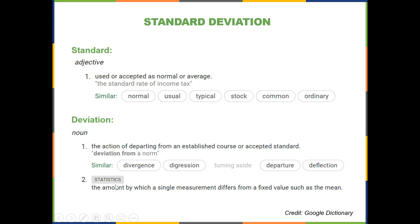In statistics, specifically, it is the amount by which a single measurement differs from a fixed value, such as the mean.